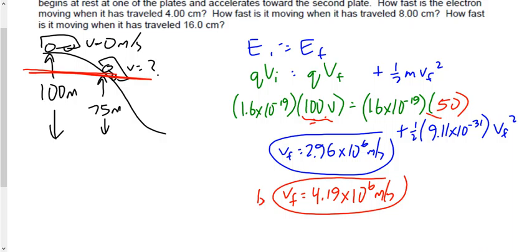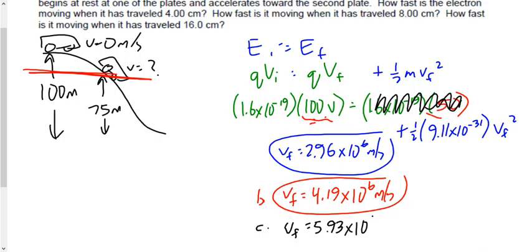For part C, the electron has traveled the full 16 centimeters — all the way to the bottom of the hill. The initial potential is 100 volts and the final potential is 0 volts. There's no potential energy left at the end. The answer is 5.93×10⁶ meters per second, which makes perfect sense — it's in the 10⁶ range, and it's the largest speed of the three, since we're all the way at the bottom of the hill.